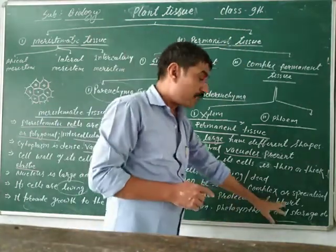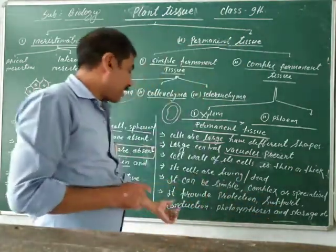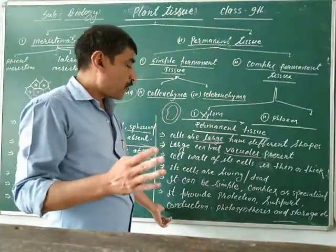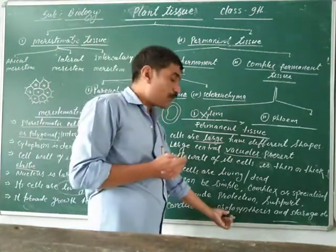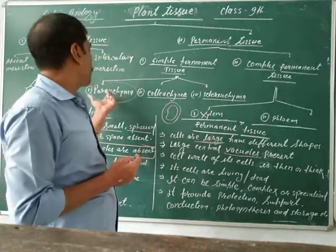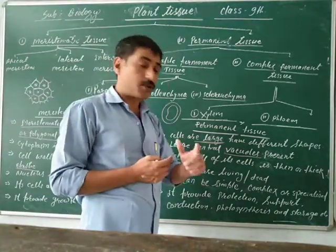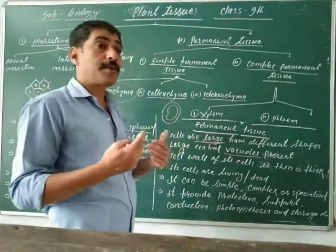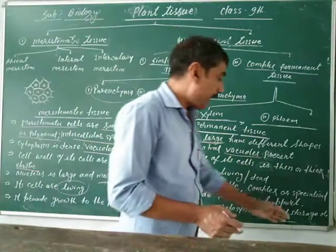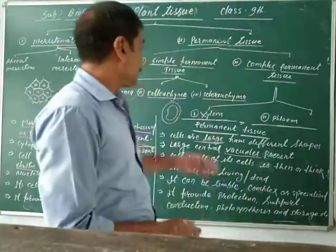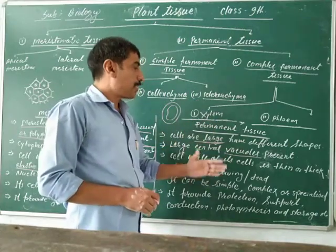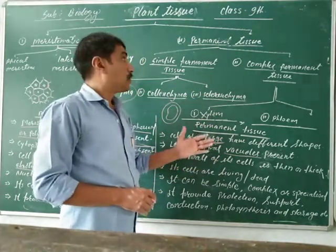Permanent tissue helps provide strength and protection to plant parts. Support — it can be modified for structural support. Conduction — it conducts water, minerals, and food from one part of the plant to another. Photosynthesis — modified parenchyma also helps in photosynthesis, preparing food through the photosynthesis process. Storage — secretions synthesized by the cells are stored in the permanent tissue.